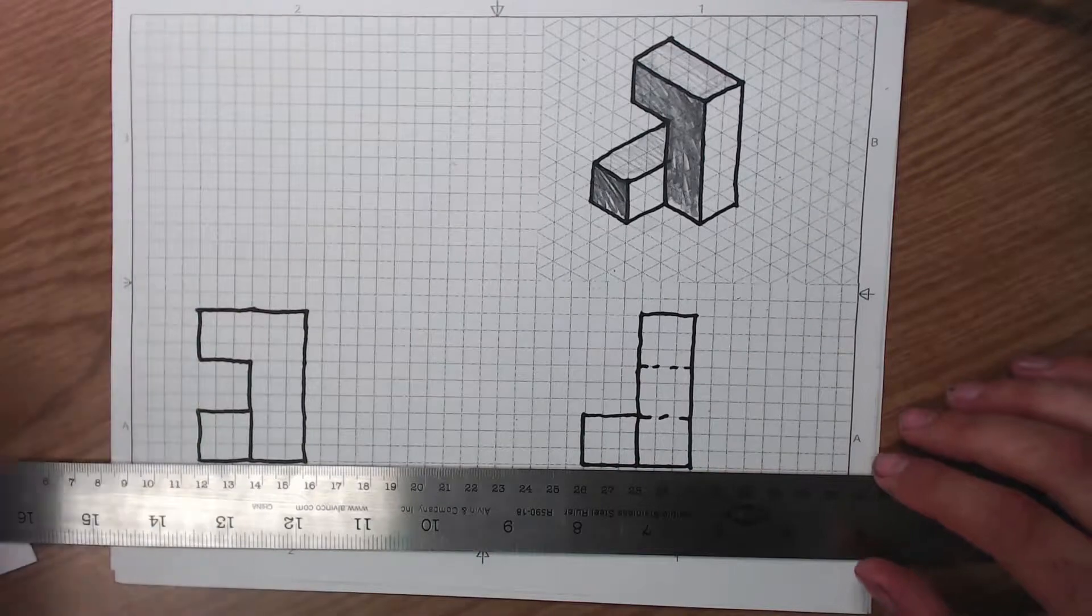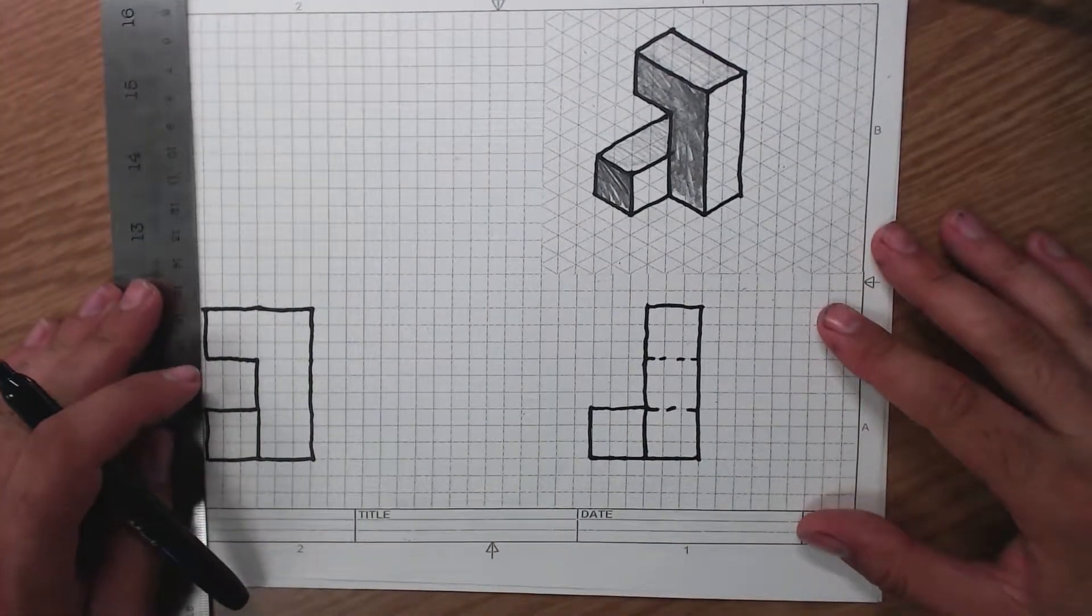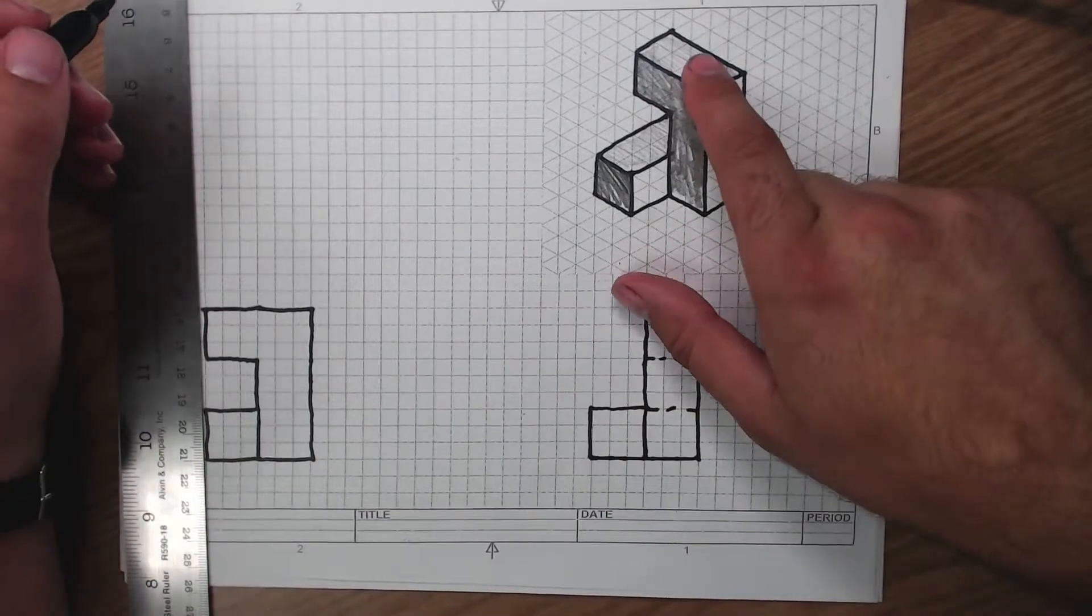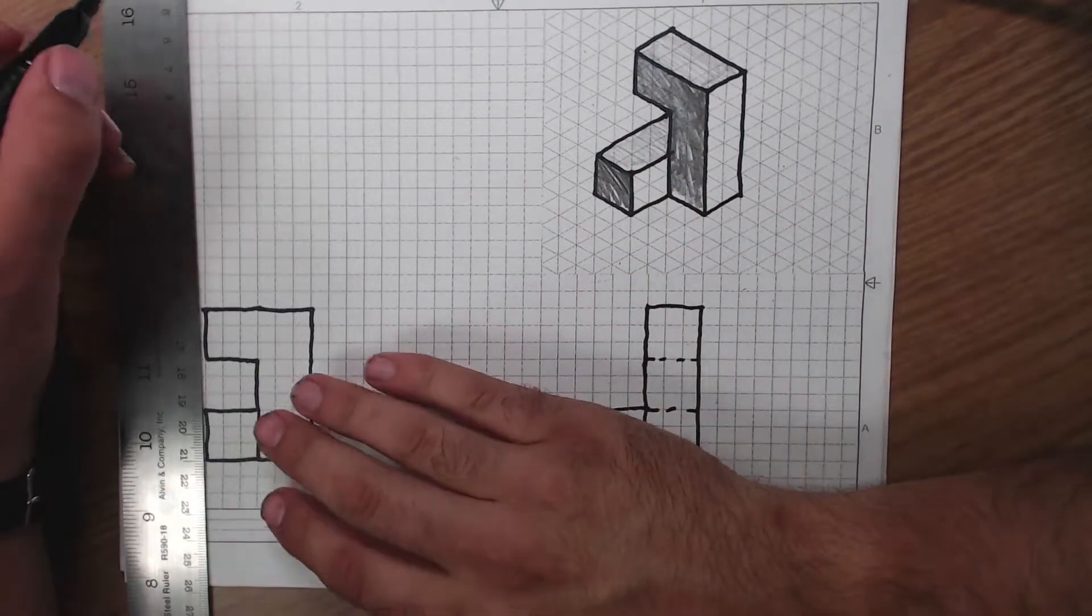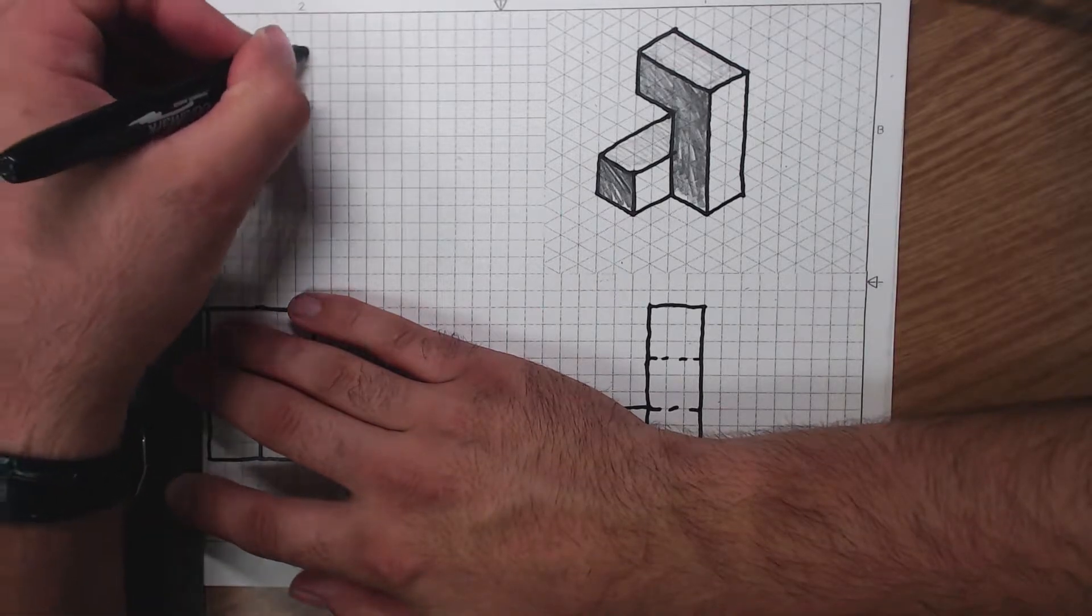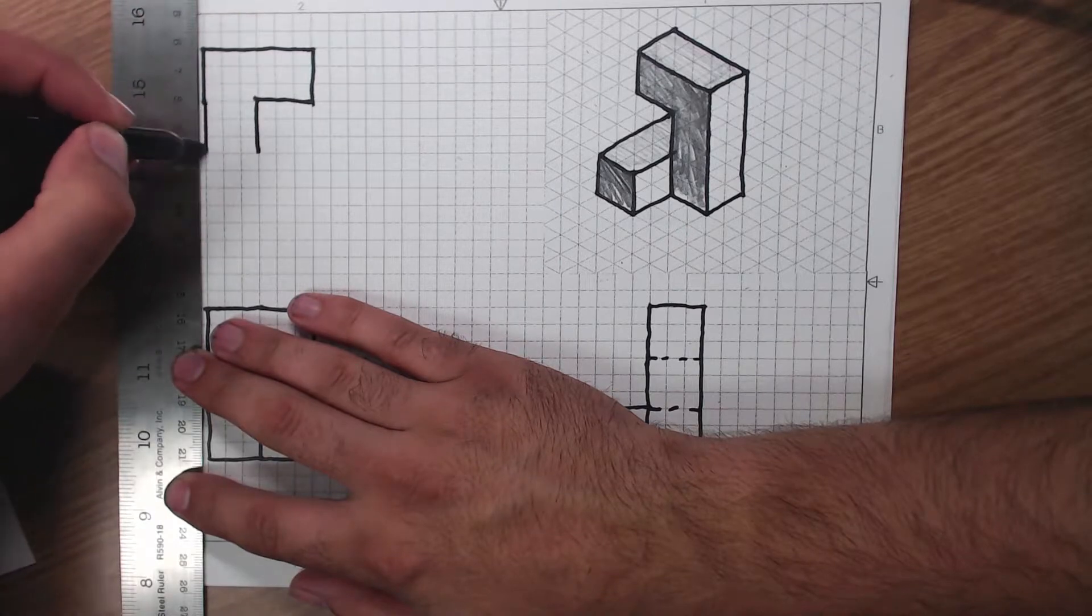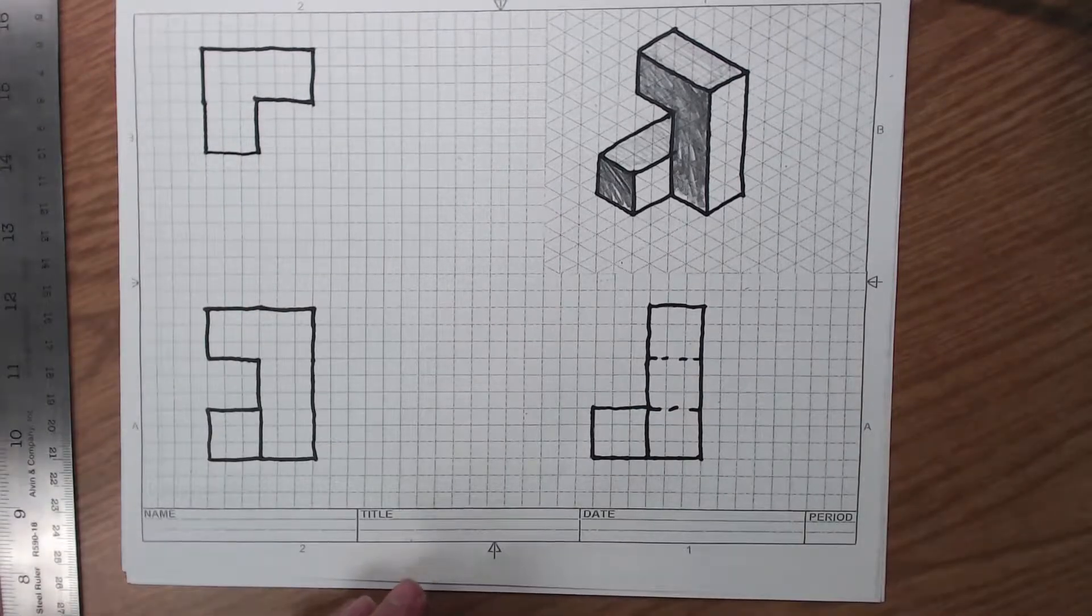Back to my front. Got to do the top. And I'm going to do the same thing here. That has to line up with my front view. And this is going to be the medium shaded region that I'm drawing now.